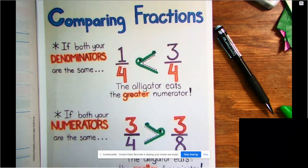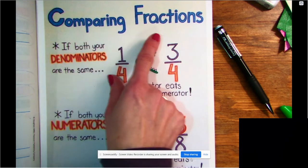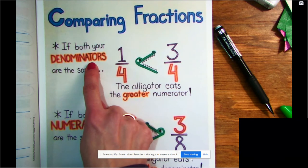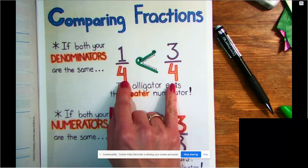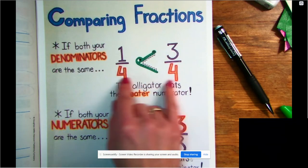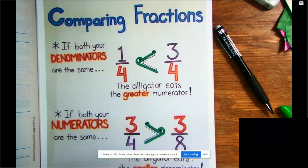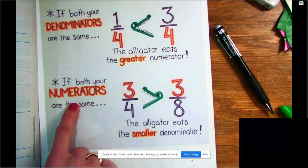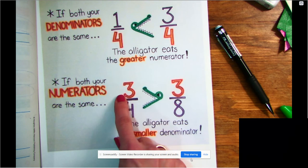Hey everyone! Yesterday we talked about comparing fractions when the denominators, the number on the bottom, was the same. So we talked about these are the same number of pieces. Today we're going to compare fractions when the numerators are the same.